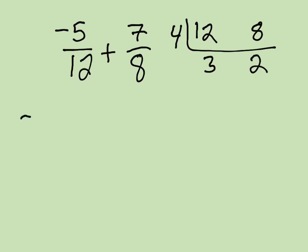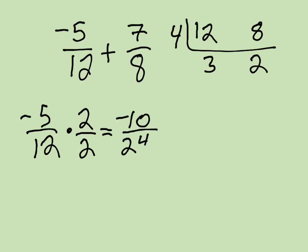And so negative 5 twelfths, I look diagonally down. I multiply that by 1 in the form of 2 over 2, and that gives me negative 5 times 2 is negative 10, and 12 times 2 is 24. And then I have my 7 eighths, and I multiply that by 1 in the form of 3 over 3, because I'm looking diagonally down. And so that's 21 over 24.